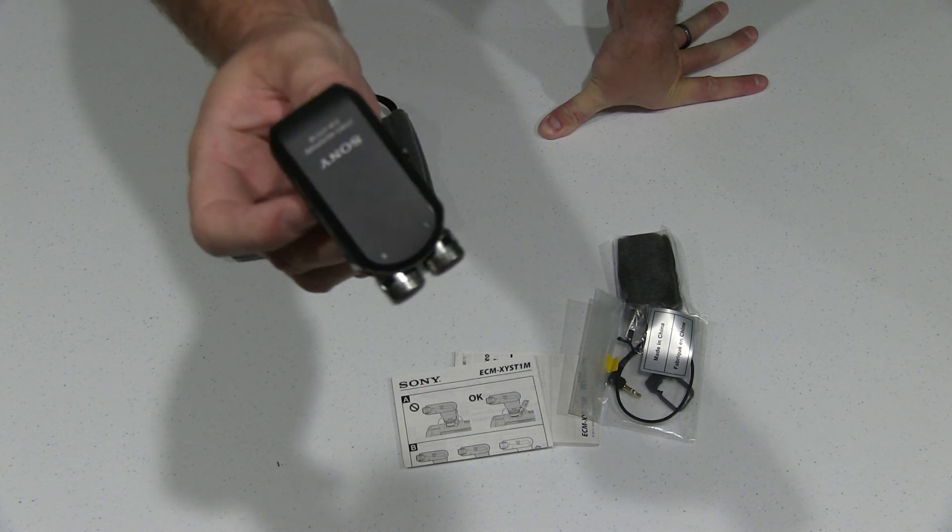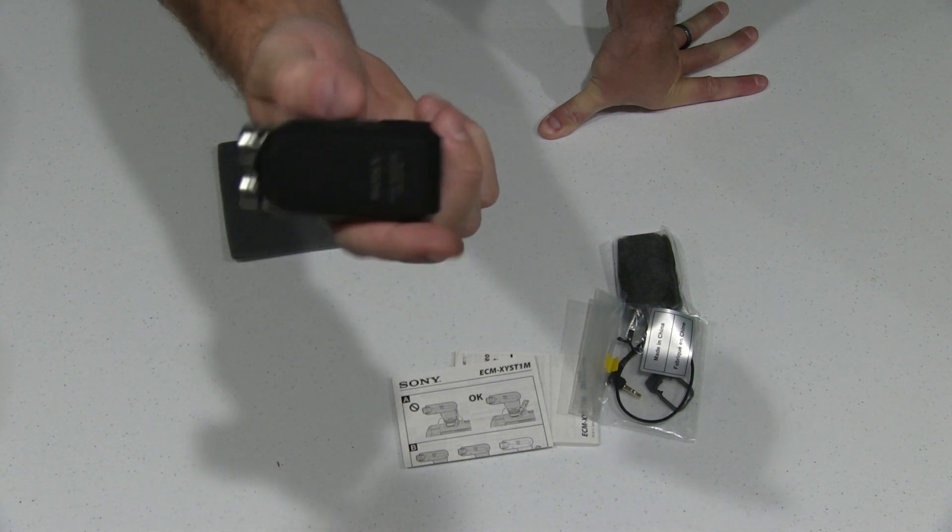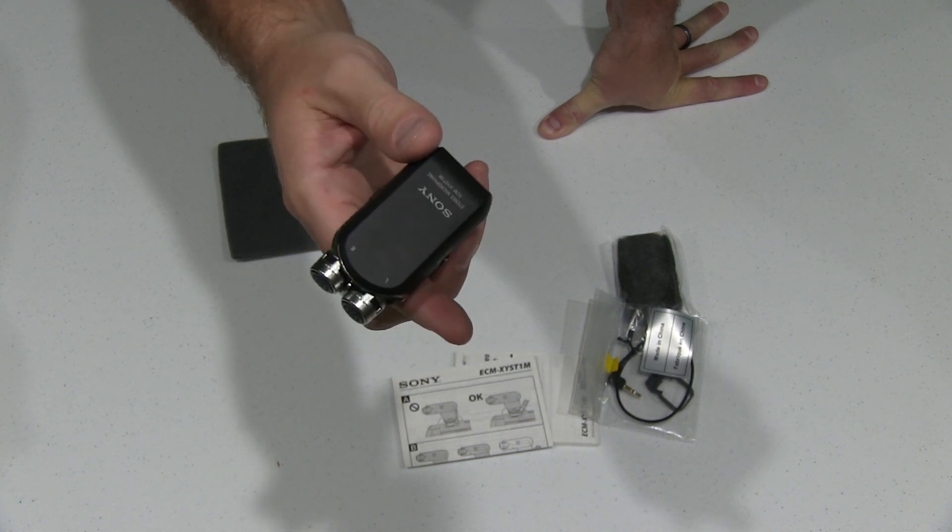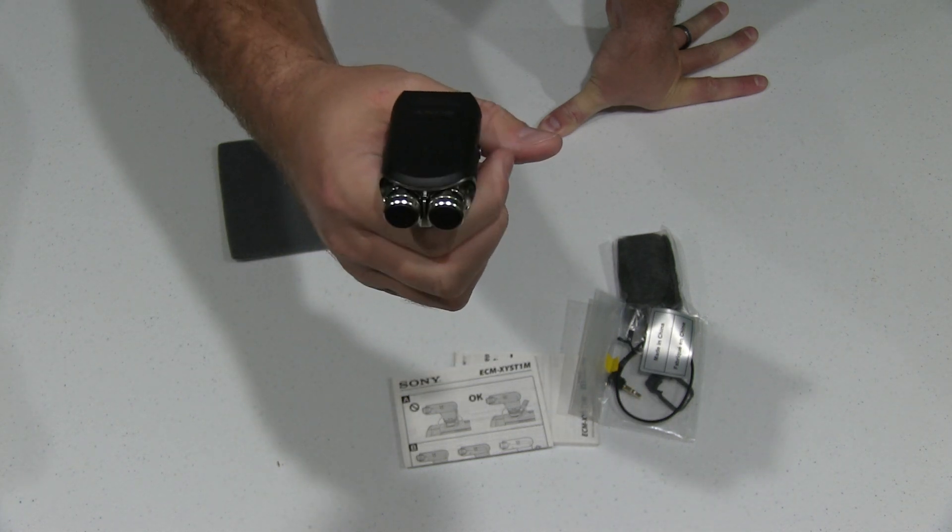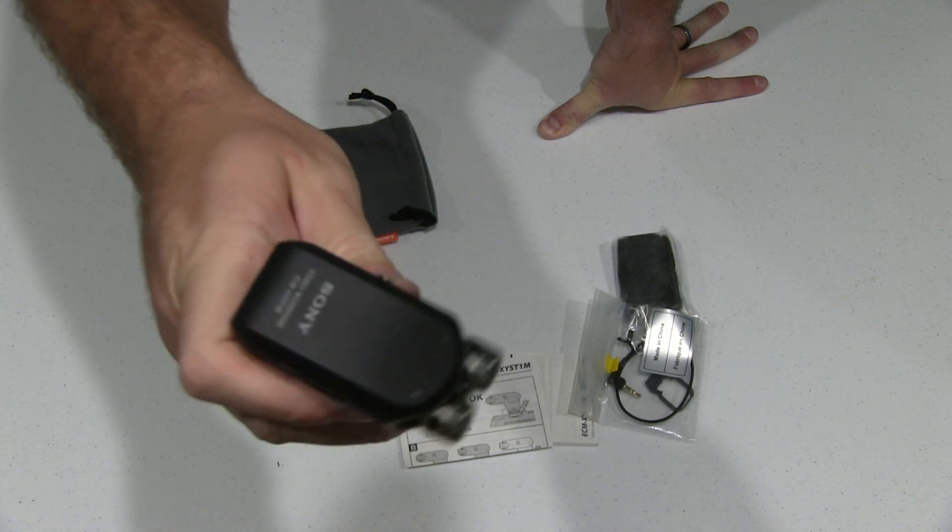I'm going to see how this performs first since it is a stereo mic. If it meets or exceeds my expectations, I probably don't need the shotgun. What's cool about the shotgun is that as you zoom the camera in and out, it'll adjust the audio levels accordingly.